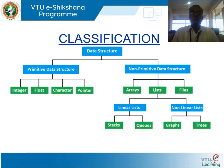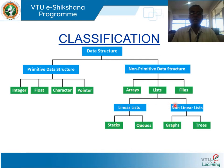Data structures are classified broadly into two categories: primitive and non-primitive. Primitive data structures are non-decomposable basic types — integer, float, character, and pointer. Non-primitive data structures are further classified into linear and non-linear. Linear data structures store data in a sequential fashion; examples include array, stack, queue, list, and files.